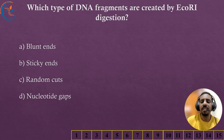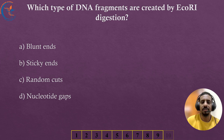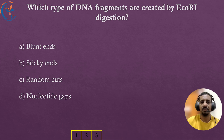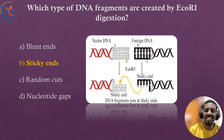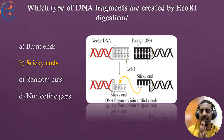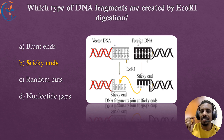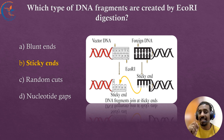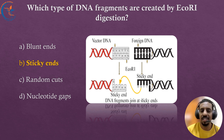Which type of DNA fragments are created by EcoRI digestion? The correct answer is sticky ends. EcoRI cuts DNA in a staggered manner — when it recognizes its specific sequence, it doesn't cut straight across both strands at the same point. Instead, it creates an offset cut, resulting in sticky ends, as seen in the image.